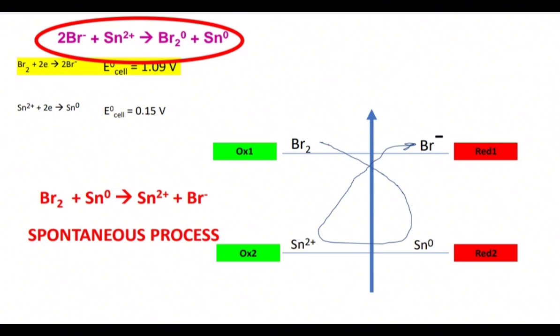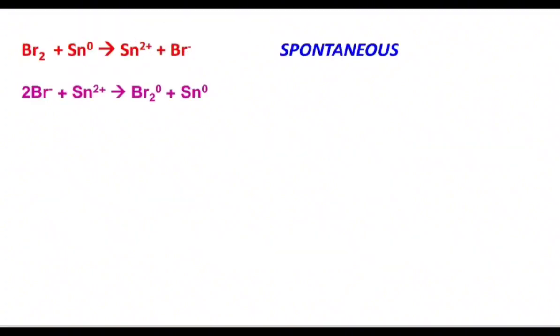They give the products which are on the right side of the arrow—oxidizer two and reducer one—and such a reaction will be spontaneous. Let's now compare this spontaneous process with our process—it is in the circle, the main reaction.